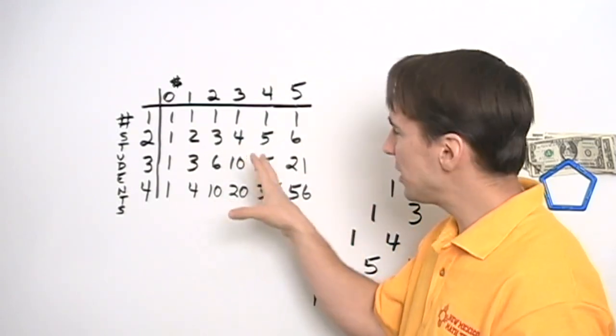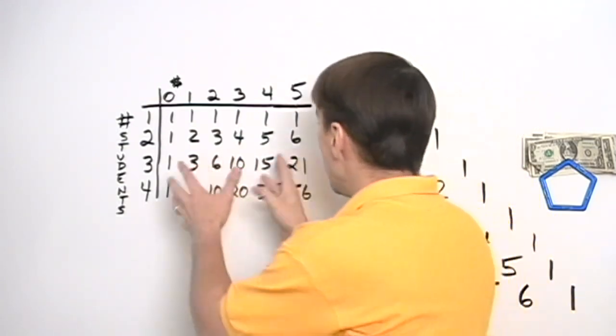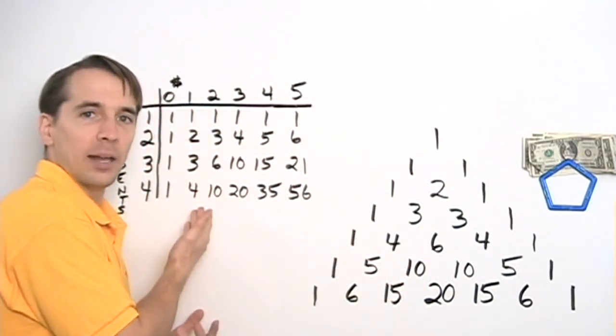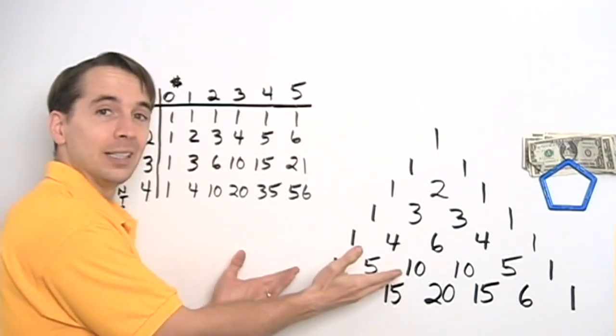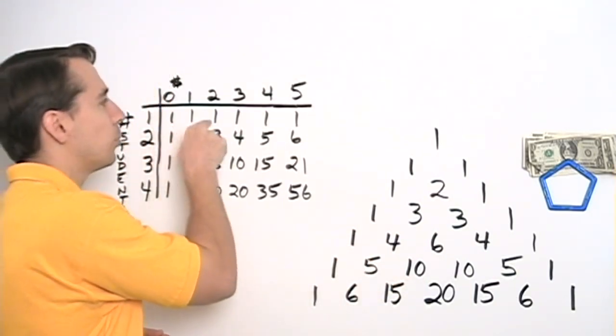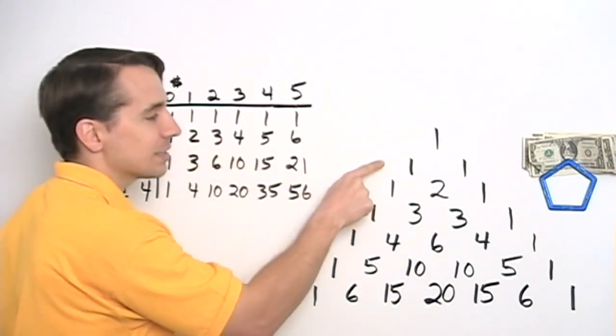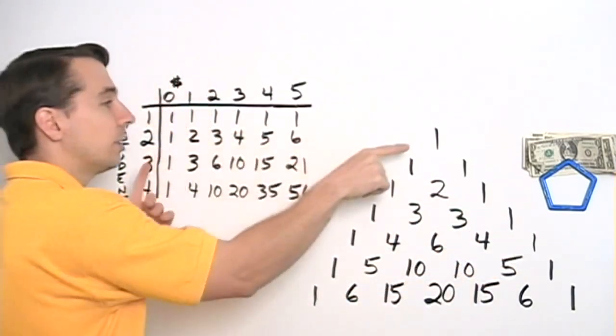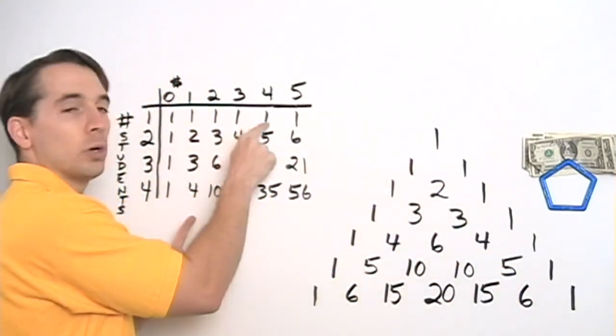That's interesting. So we have this neat pattern in this table, and since this table is the same thing as Pascal's triangle, when we find a neat pattern in the table, we've found a neat pattern in Pascal's triangle. Specifically, when we're adding up a row here, that's the same as adding a diagonal over here. Because the diagonals of Pascal's triangle are the same as the rows of this table.